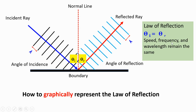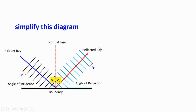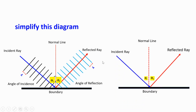The speed, frequency, and wavelength remain the same. To simplify this diagram, we are going to remove all these wavelengths and keep just the incident ray, normal line, and the angles.